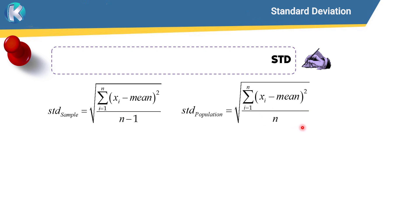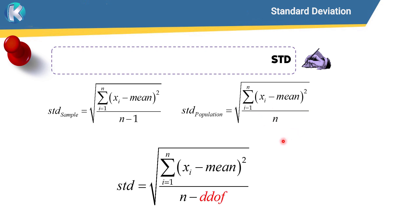Generally speaking, the formula for calculating the standard deviation has n minus something in the denominator. That 'something' is called ddof in the NumPy package — it means delta degree of freedom. If ddof is 1, you are calculating the sample standard deviation. If ddof is 0, you are calculating the population standard deviation.